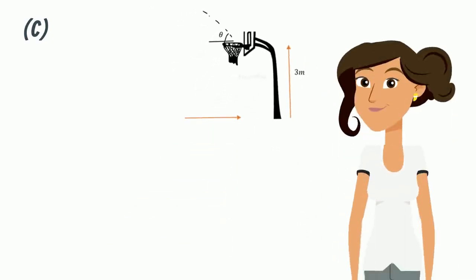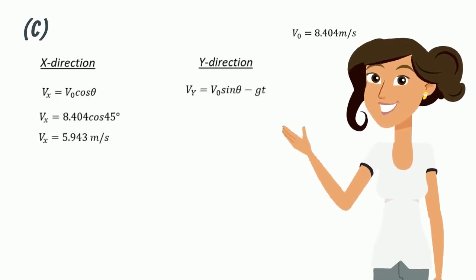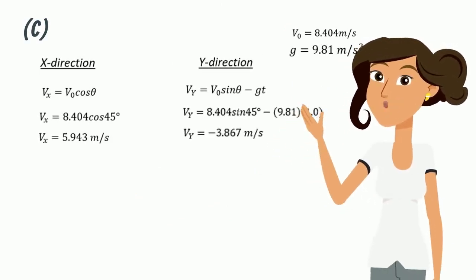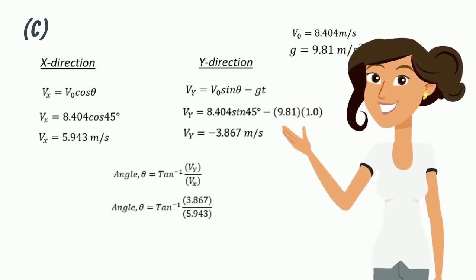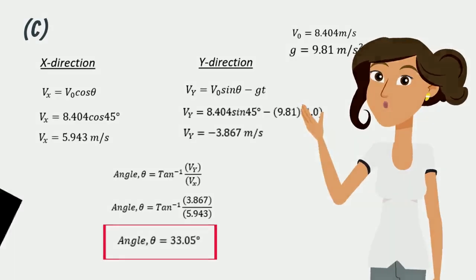Thirdly, to find the angle of the ball as it goes down the hoop, use the kinematic equation in x and y-direction by keeping the unknown as final velocity, vx and vy. Upon finding vx and vy, we take the inverse arc tangent, vy over vx, and we can find the angle, which is 33.05 degrees.